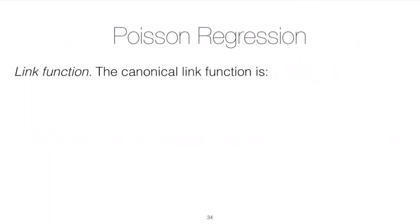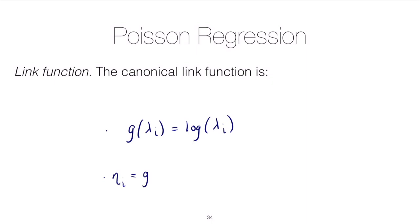The canonical link function is the log link. The function of our mean — in this case our rate — is simply equal to the log of the rate parameter λ. This is called the canonical link function because it relates the linear predictor η to the canonical parameter θ from the exponential family formulation of the Poisson. So η = g(λ) = log(λ) = θ.